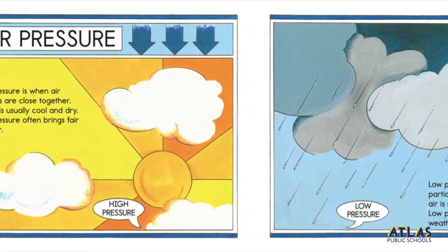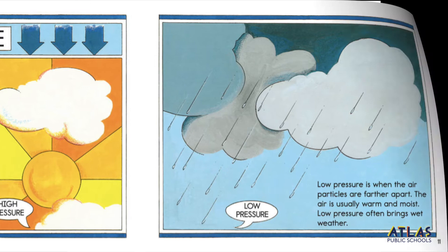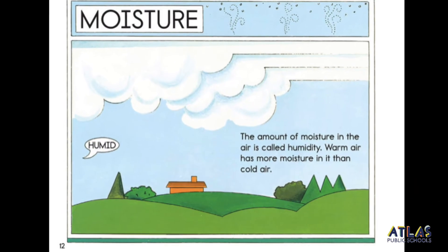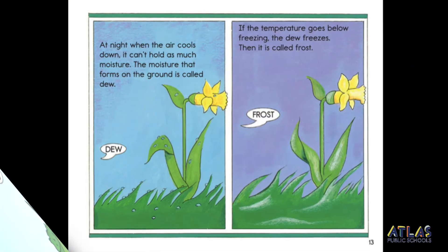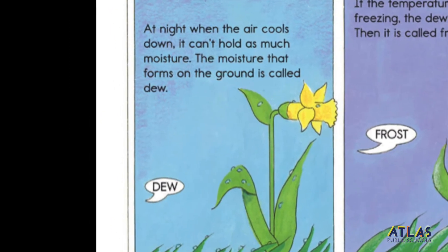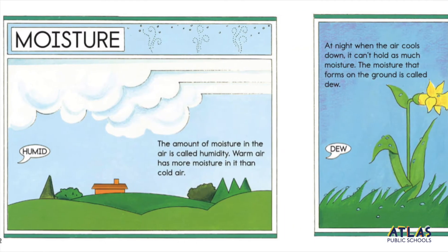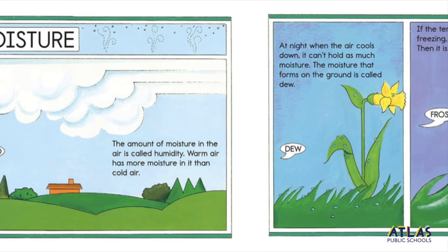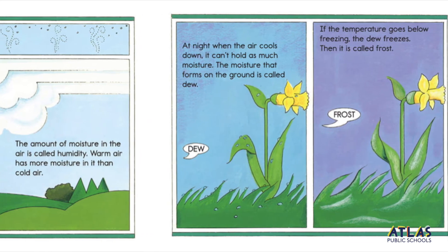Low air pressure means air particles are farther apart. The amount of moisture in the air is called humidity. Warm air has more moisture in it than cold air. At night, when the air cools down, it can't hold as much moisture. The moisture that forms on the ground is called dew. If the temperature goes below freezing, the dew freezes. Then it's called frost. So we can tell how much moisture is in the air by measuring humidity. And the temperature of the air is what determines if the moisture is going to be dew or frozen as frost.